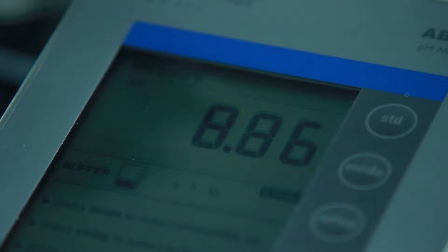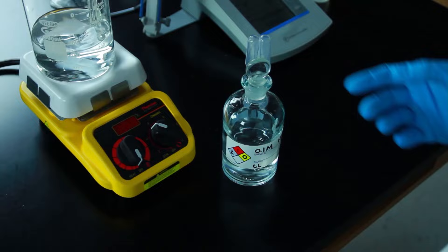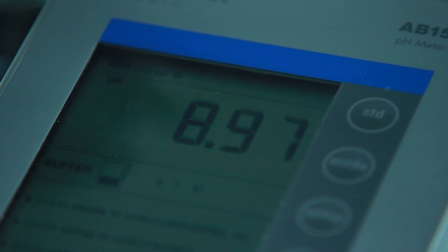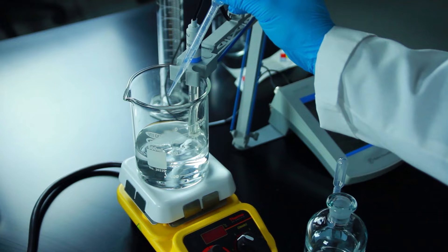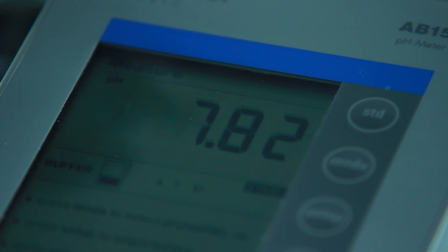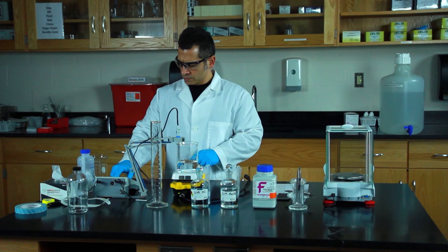We need to add hydrochloric acid to lower the pH to 7.8. Add a couple of drops into the beaker. Wait for the pH to stabilize. Now add a few more drops of hydrochloric acid until you reach the target pH of 7.8.